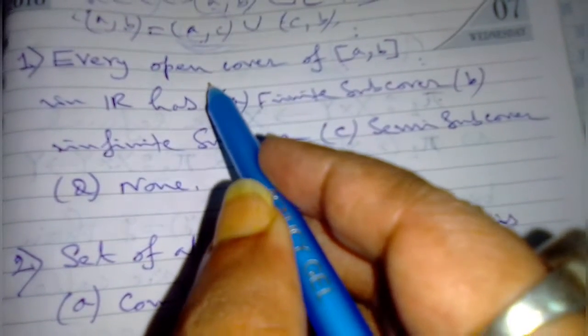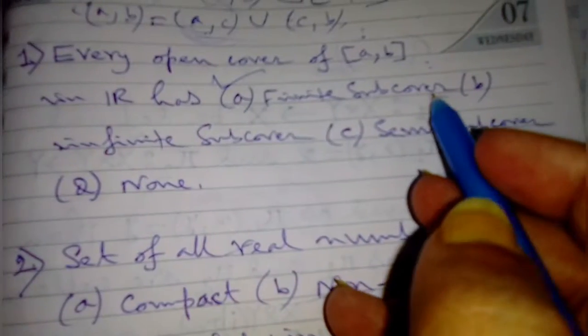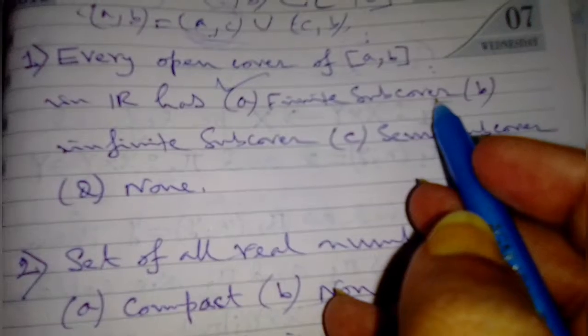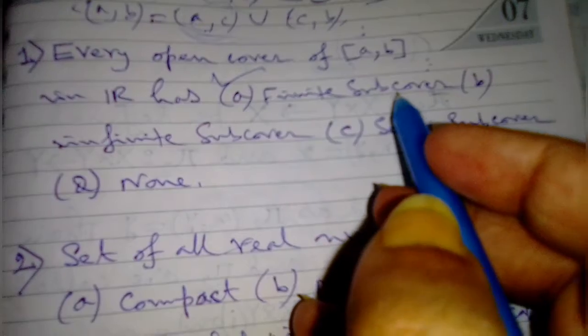So the answer will be the first option - it is a finite subcover. And it is also called the compact set. Closed and bounded in R is a compact set.